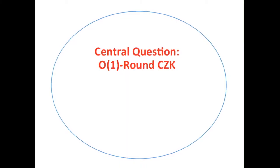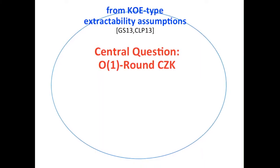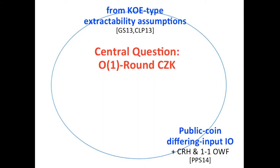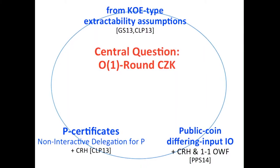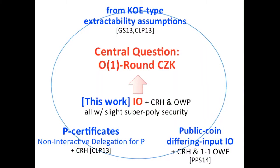In recent years, a couple of constructions emerged using very strong assumptions — for example, knowledge-of-exponent type extractability assumptions, or public-coin differing-input IO (which is itself an extractability assumption), or a new assumption called a P-certificate, which is basically some non-interactive delegation for P. So far, the only candidate is Micali CS-proofs essentially. In this work, we show that IO suffices if given together with a collision-resistant hash function and a one-way permutation, with all primitives having slightly super-polynomial security.